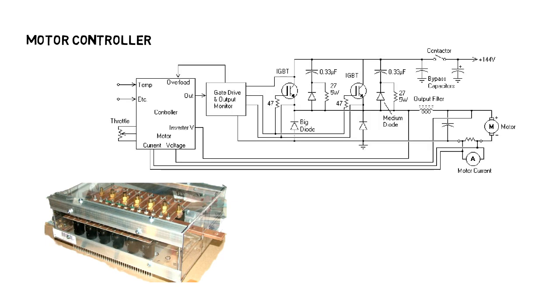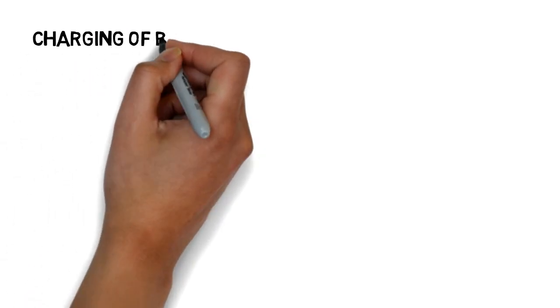The motor controller is essentially the brain of the whole EV. It is a three-way interface between human input, the motor and the battery pack. The motor controller takes input from the driver through the gas pedal and converts it into signals for the BMS. It also controls the electric motor — it supplies more current to the motor when more torque is required and increases the voltage across the motor when high RPM is required. Likewise, it turns on and off the regenerative system when needed.